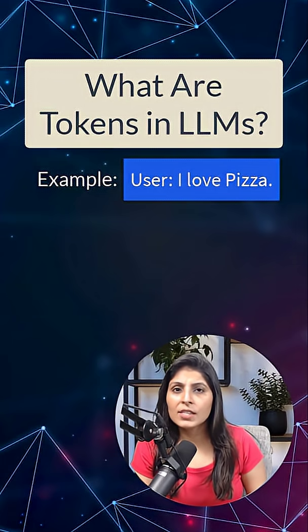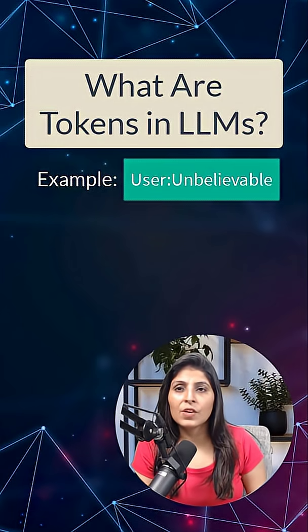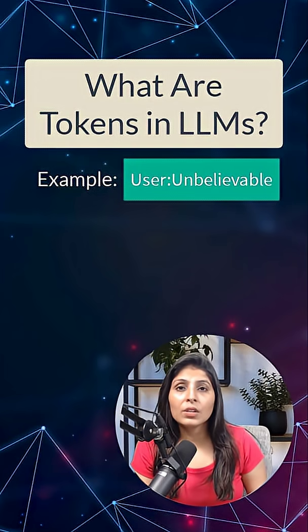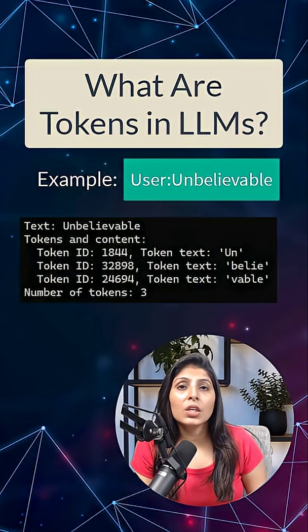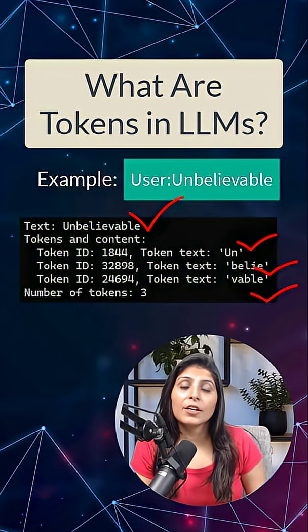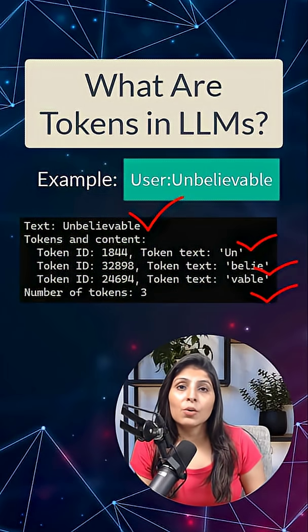Now let's see another example. This time we gave this text to the LLM. For this text, it gave us three tokens — even though this is a single word, the model divided it into three tokens.